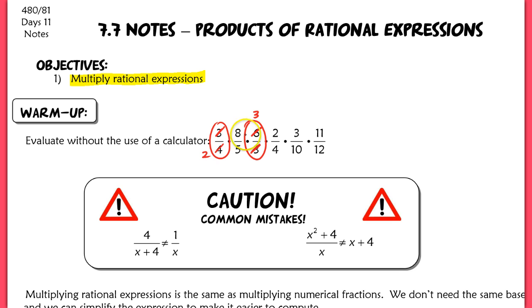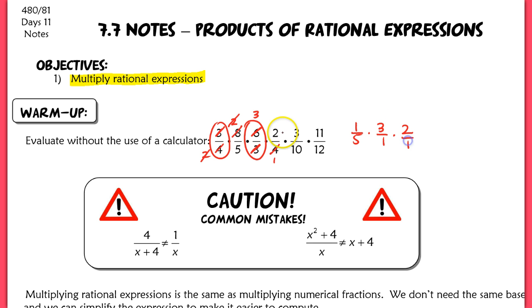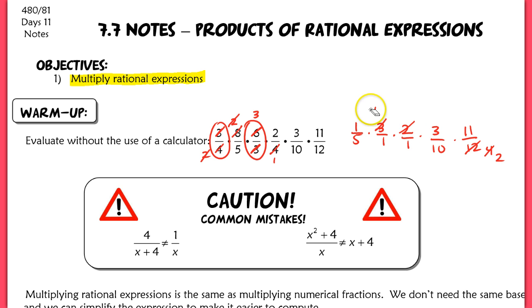Continuing to look for things to cancel, I can take that 8 and the 4 here and reduce that — the 8 reduces to 2. I just look for common factors and factor those out. Now I have 2 and a 2 here which will cancel, and I'm left with 1 fifth times 3 over 1 times 2 over 1. Then 3 and the 12 cancel, that 12 reduces to 4, and the 2 fits into that 4 twice. So now I'm left with 1 fifth times 3 tenths times 11 halves.